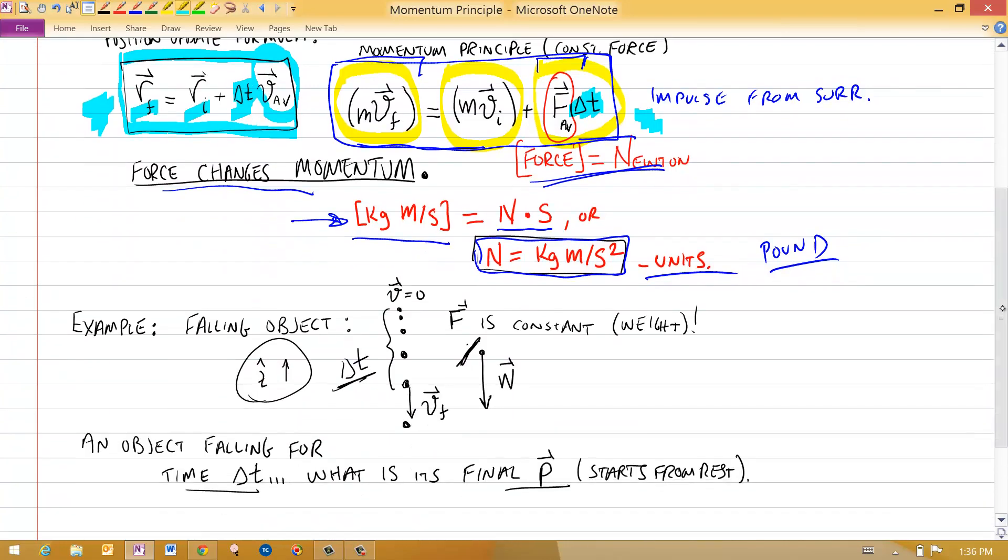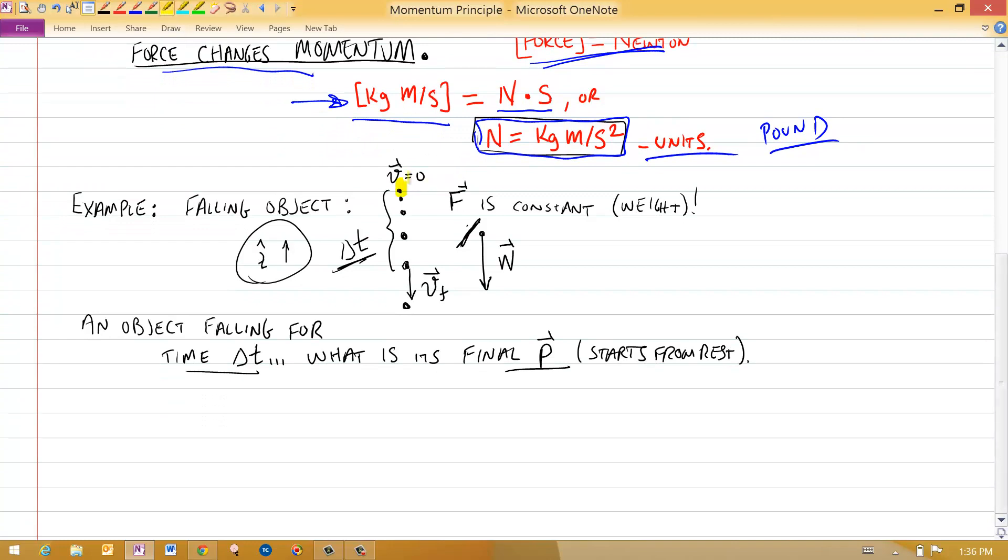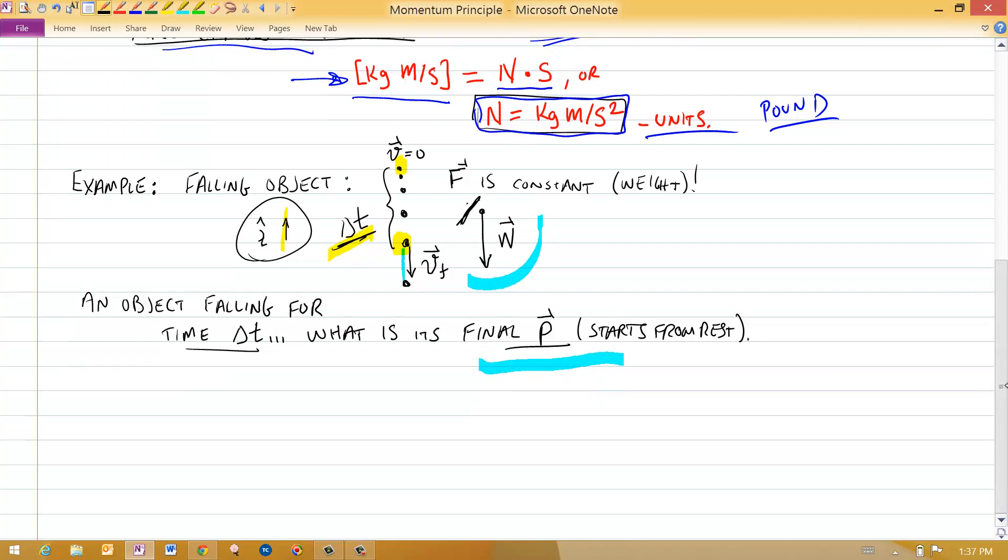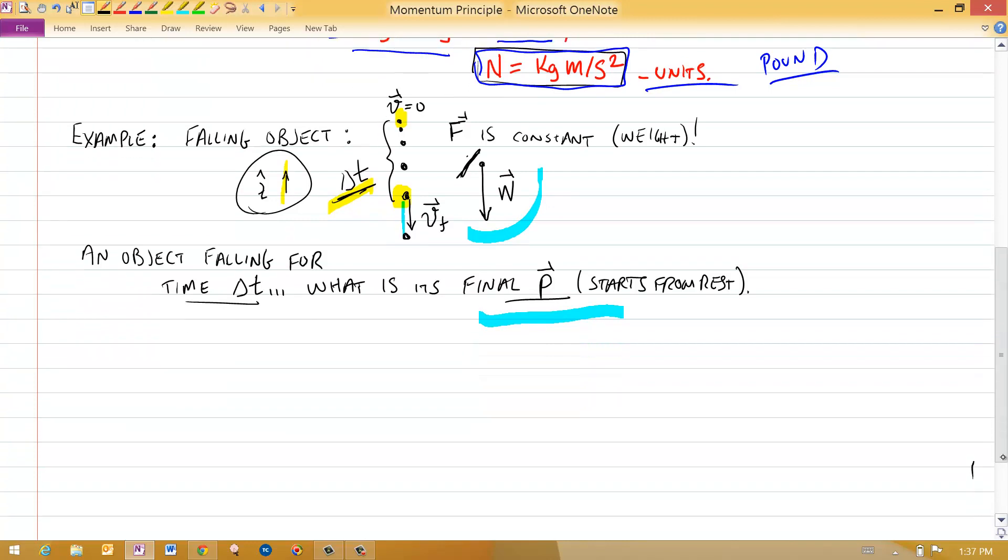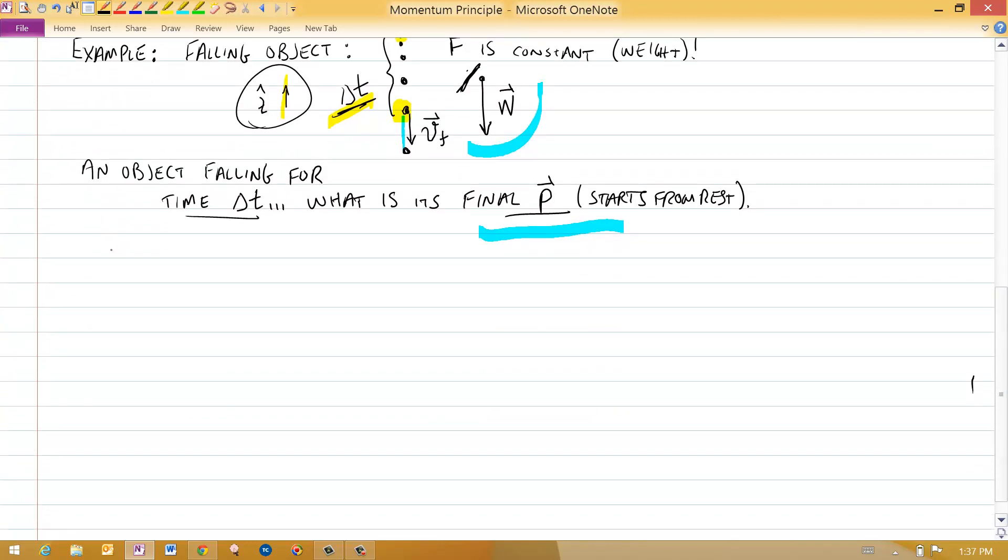So let's take a look at an example here. Here we have a falling object. It starts right here with a velocity equal to zero. Here is the z direction pointing upwards. And after a time delta t, it's sitting right there. And you can see what its final velocity is. It's now no longer zero. Now the force from the surroundings in this case, the object is the system. The force is the weight from the surroundings. It is a vector that points downward. So the thing I want to know is, what is the final momentum if it starts from rest? And I'm going to answer this question in the problem solving format that we're going to be using in this course. So the director for this problem says, this is a direct application of the momentum principle.